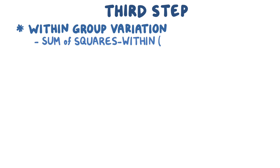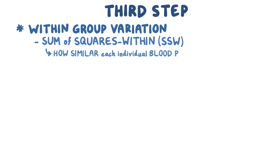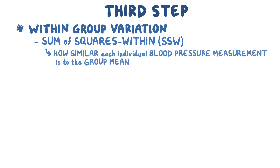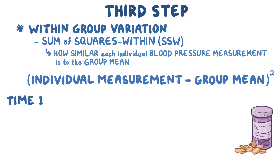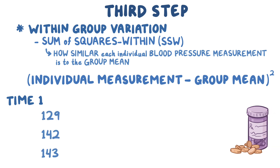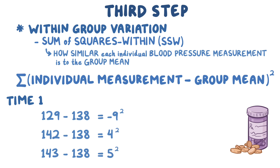The third step is to find the within-group variation, also called the sum of squares within, or SSW. The SSW measures how similar each individual blood pressure measurement is from its own group mean. To find it, you take each individual measurement, subtract that group's mean, then square it. For example, taking the first three measurements in the time one group — 129, 142, and 143 — and subtracting the group mean of 138 gives negative 9, 4, and 5. Squaring and adding those gives 81 plus 16 plus 25, which equals 122.